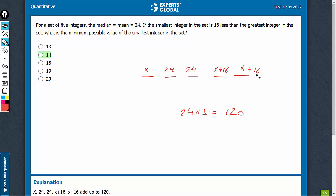So 24, 48 and 32, 80, plus x, x, x, 3x. 3x plus 80 is equal to 120. x turns out to be 40 upon 3, which is 13.33.